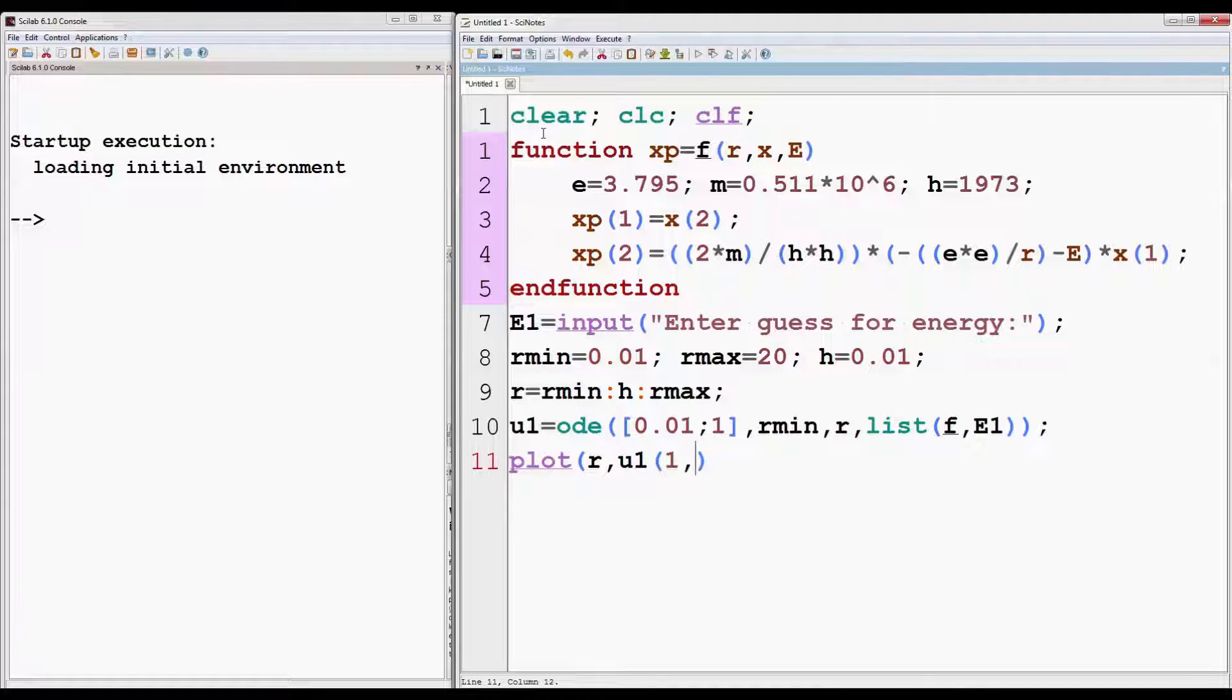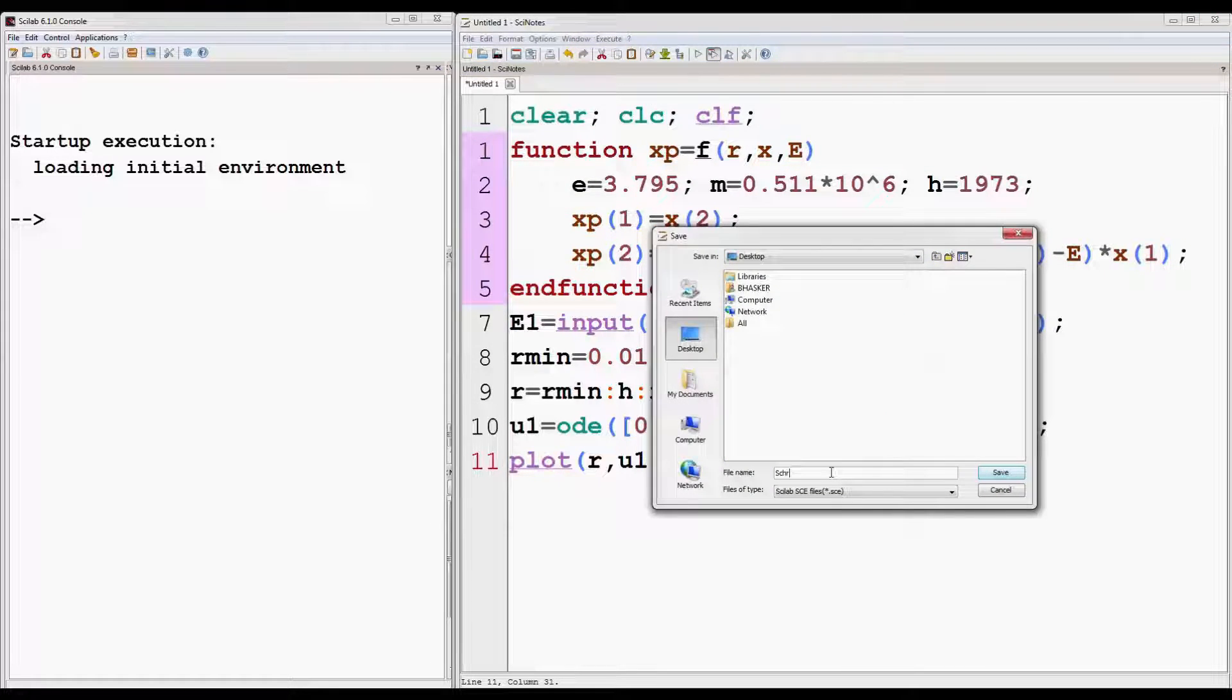Now this is the format for solving differential equation for energy E1 using ODE function. List function has been used so that we can use same function F for different values of energy. We don't need to give the value of energy inside the function every time. Let the solution for energy E1 is U1. Now let's plot r with first row of U1 which is the solution of the differential equation. Set the line width of the graph to value say 10. Now run the program. Save it first.